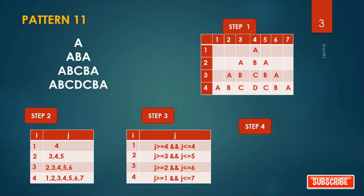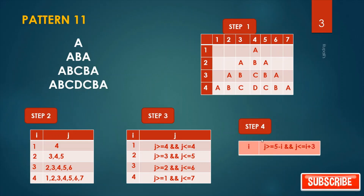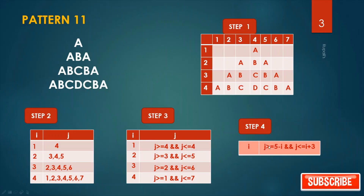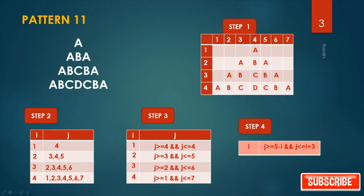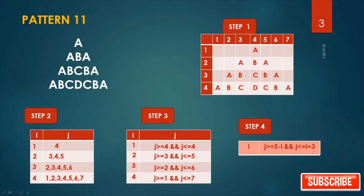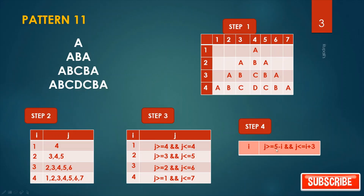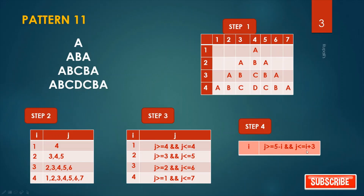Step four — the general condition: j >= (5 - i) and j <= 5, and j <= 6. These are our four steps.